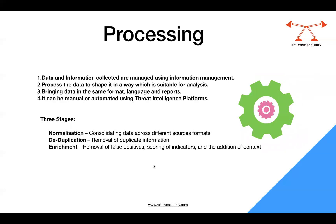The next step, once you have gathered the data, is processing. You need to sort it, organize it with metadata tags, and filter out redundant or duplicate information so that you have a well-defined dataset. When receiving raw data from different sources, you need to consolidate it across different formats so you know which items are IPs, which are domains, what the contextual information is — making the analysis process much easier.